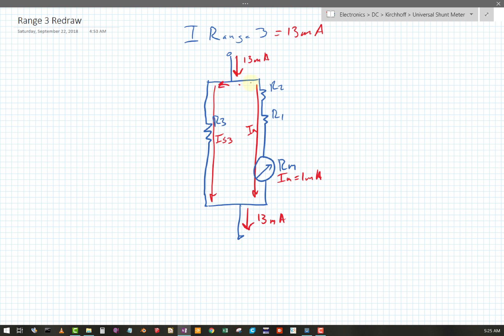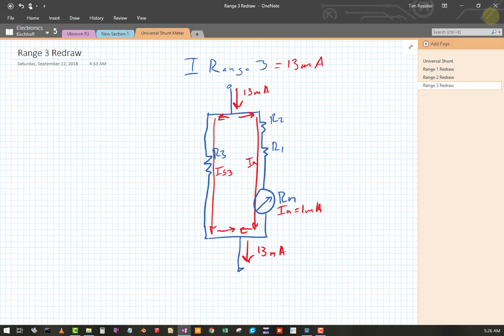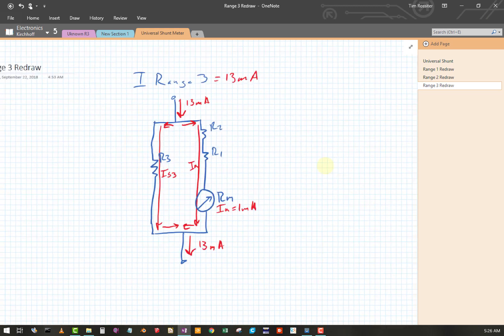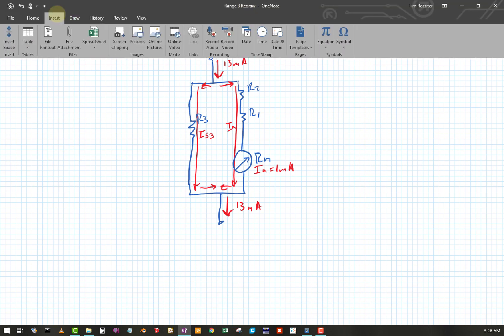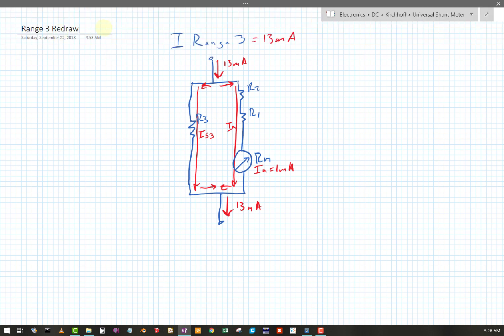Okay, so I range 3 was 13 milliamps. Okay, so 13 milliamps coming in, 13 milliamps going out. A little Kirchhoff law in real time right there. Let's call this I shunt for range 3, IS3. And if you haven't figured it out by now, this is going to be I meter, and it's still 1 milliamp. So that's super awesome.